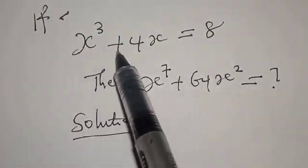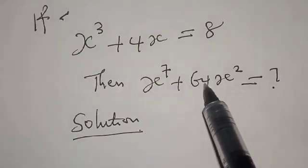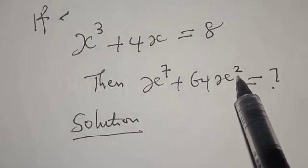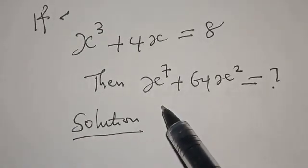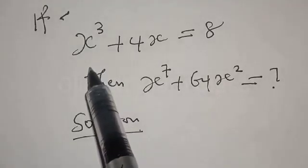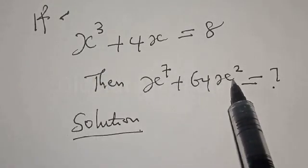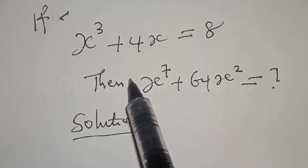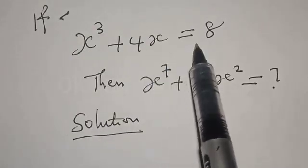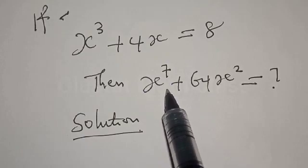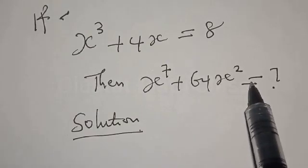If x raised to power 3a plus 4s is equal to 8, then x raised to power 7 plus 64s squared is equal to what? Hi everyone, welcome to my class. In this class, we want to look at how we can find the value of x raised to power 7 plus 64s squared from this given equation. The question is: x raised to power 3a plus 4s is equal to 8, then what is the value of x raised to power 7 plus 64s squared?